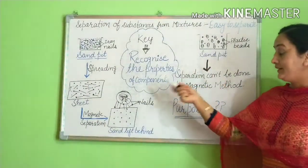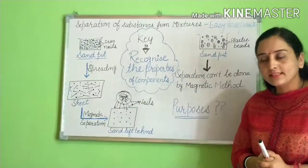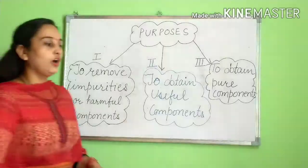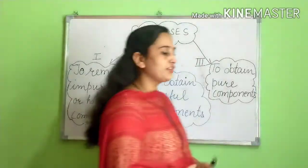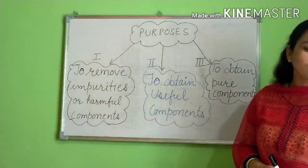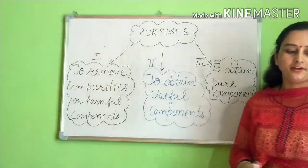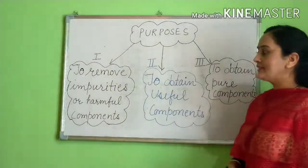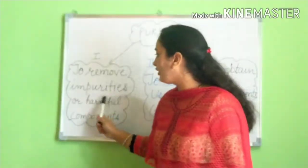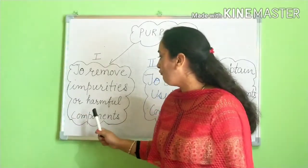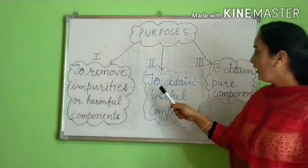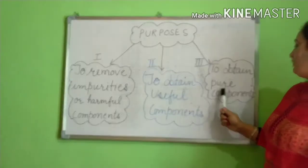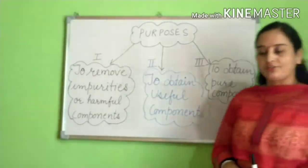What are the different purposes for separating components of mixtures? Components of mixtures are separated for three purposes: first, to remove impurities or harmful components; second, to obtain useful components; and third, to obtain pure components.